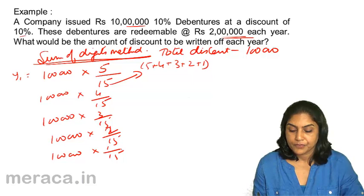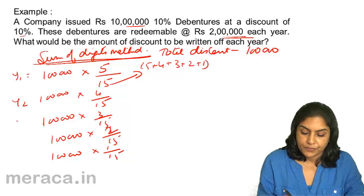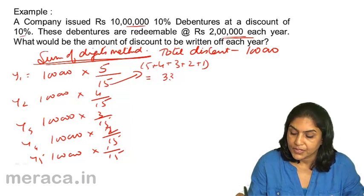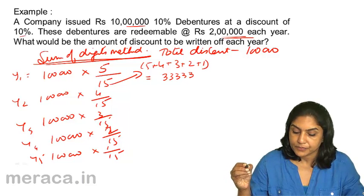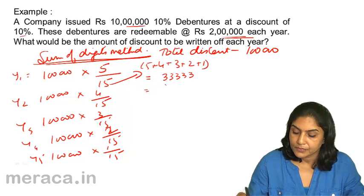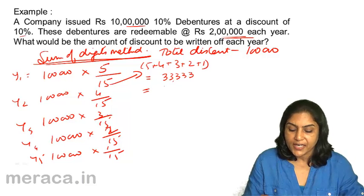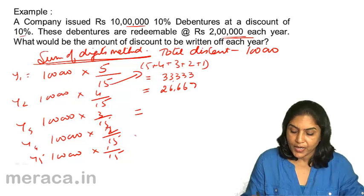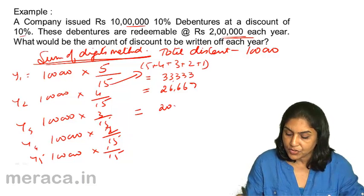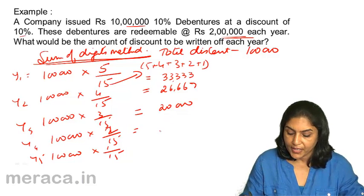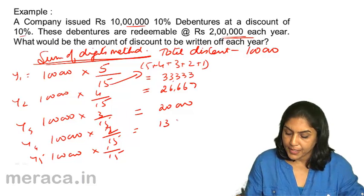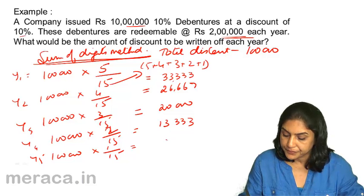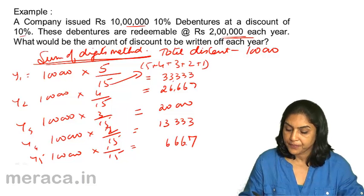The calculated amounts of discount to be written off are: Year 1 — 33,333; Year 2 — 26,667; Year 3 — 20,000; Year 4 — 13,333; and Year 5 — 6,667. Together these amounts cover the entire 1 lakh of discount.